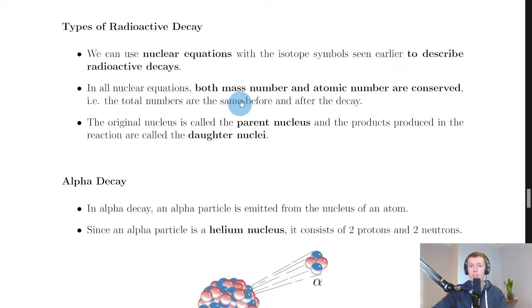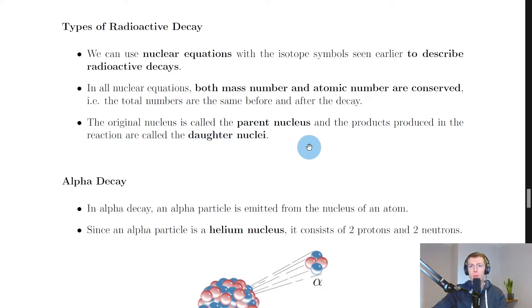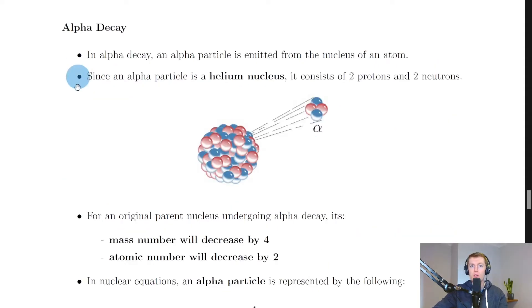In all nuclear equations, both mass number and atomic number — your A and your Z — are conserved, meaning the total numbers are the same before and after the decay. Mass number is the total number of protons and neutrons in the nucleus, and atomic number is the number of protons only. The original nucleus is called the parent nucleus and the products produced in the reaction are called the daughter nuclei.